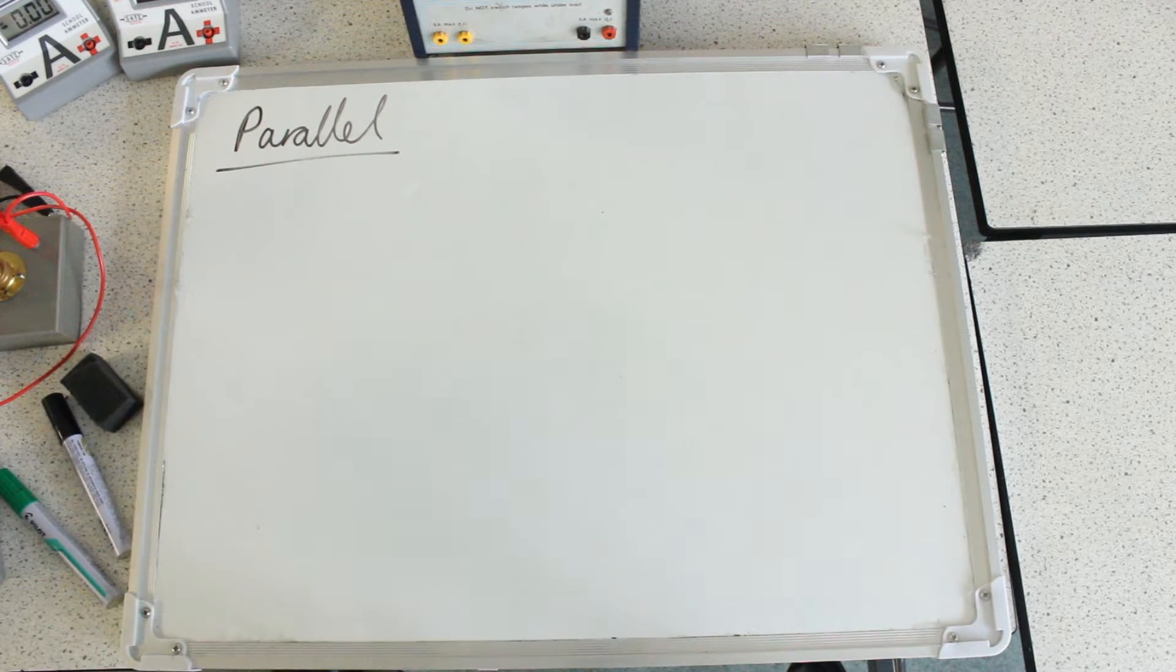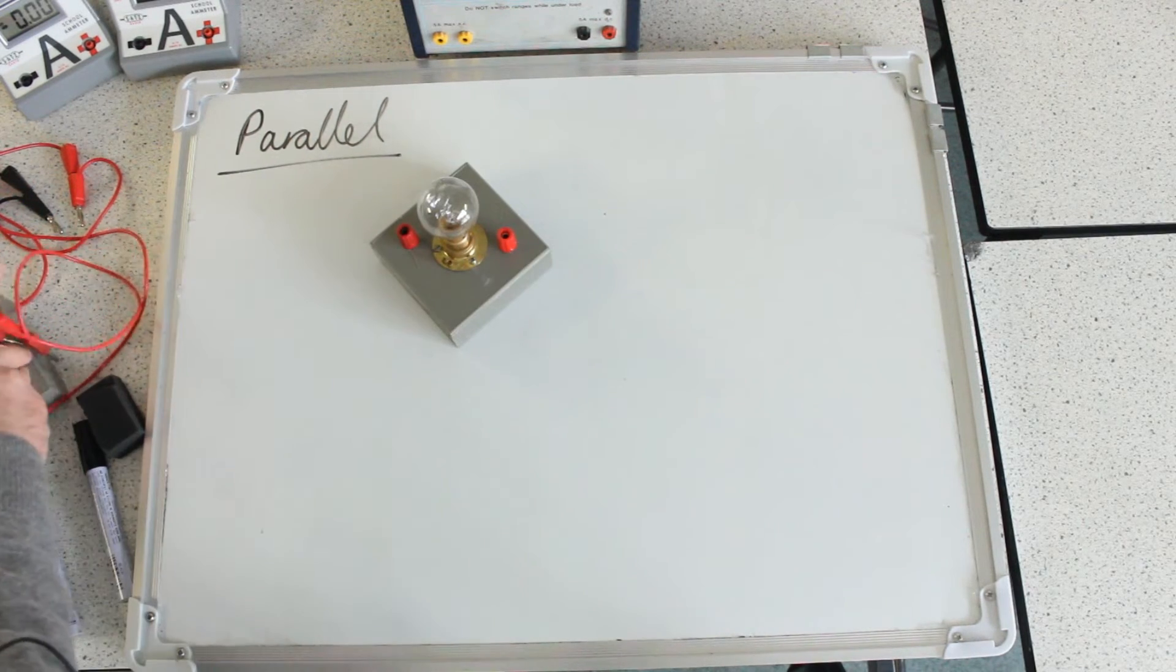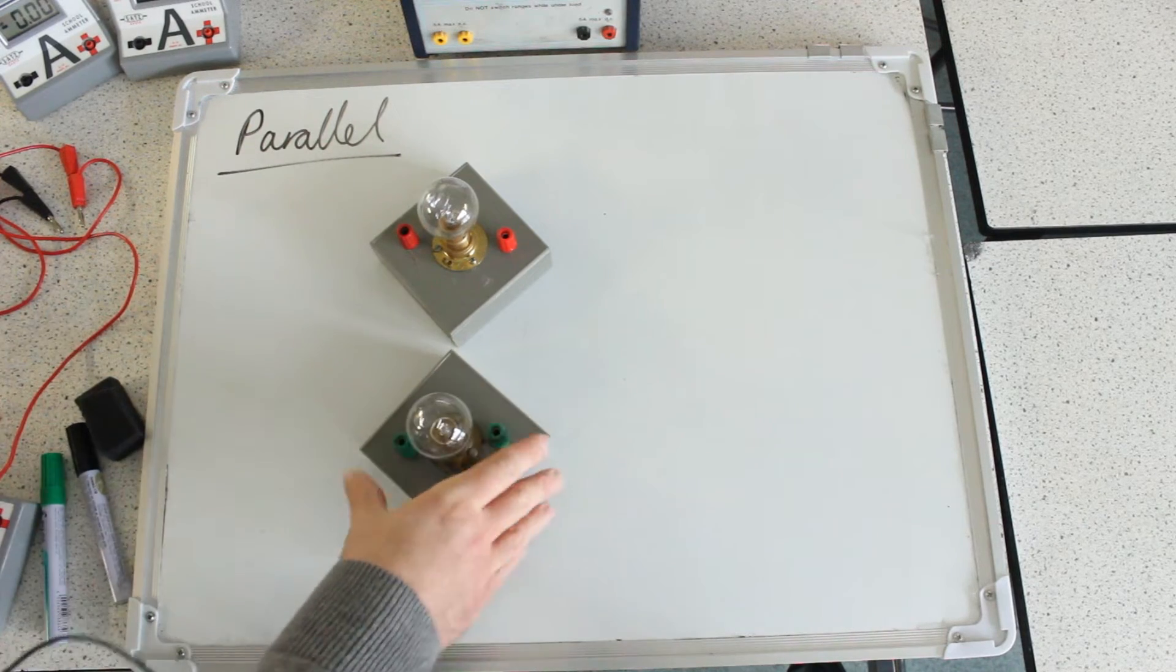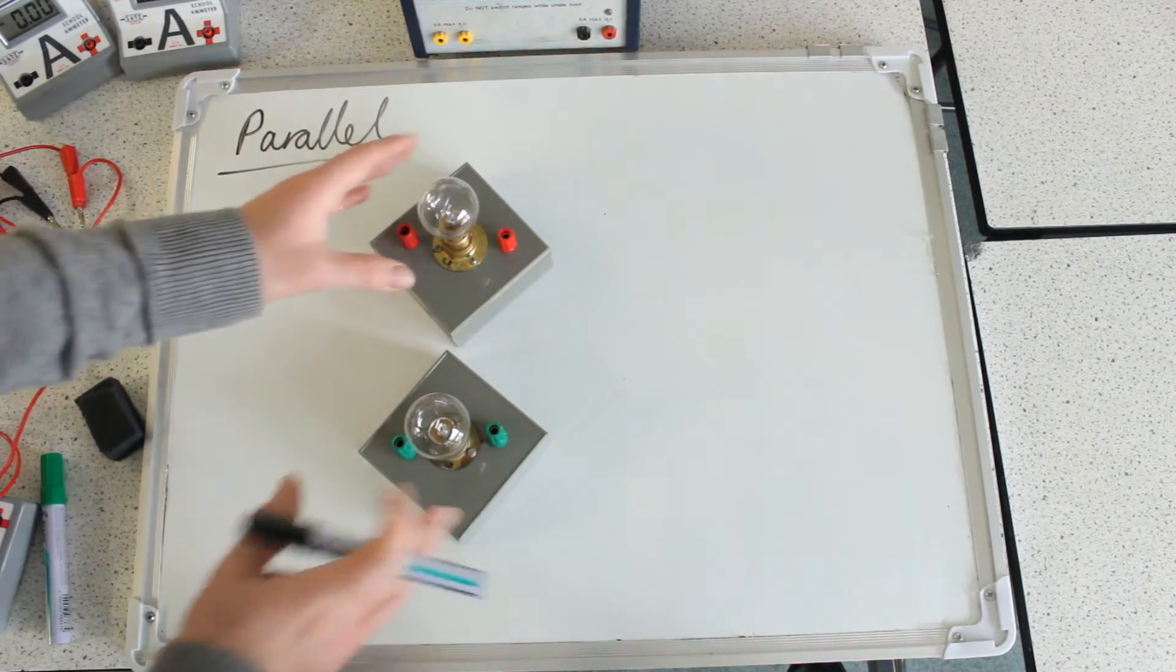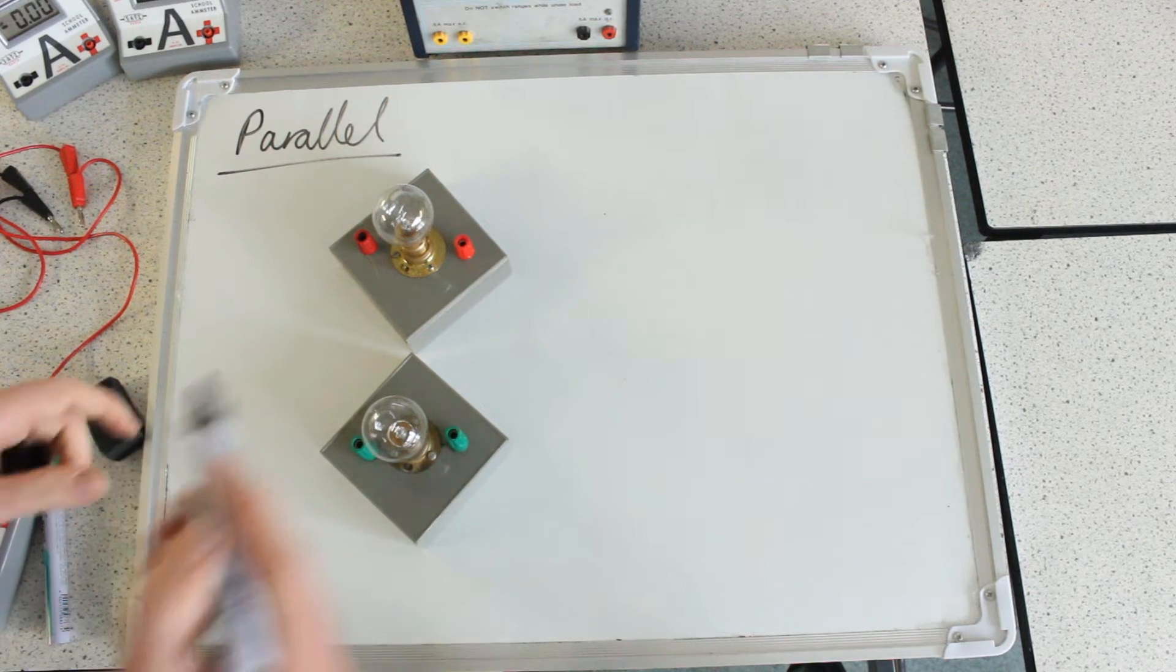So now I'm going to combine the two bulbs in parallel. Again, good practice when I'm working with things is to place them where they would be in a circuit diagram before I even reach for any wires. It's going to stop me getting as confused.